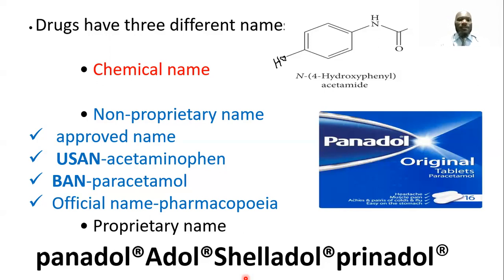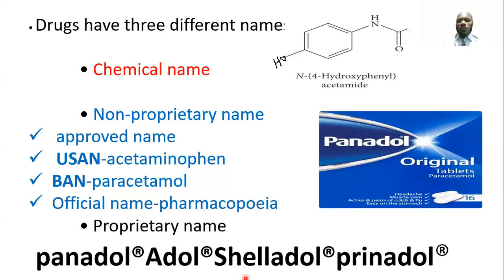Another difference is that trade name drugs may differ in color, but they contain the same active pharmaceutical ingredient. Only the excipients, such as coloring agents, may vary. The color of the drug will differ, but the active pharmaceutical ingredient will be the same.